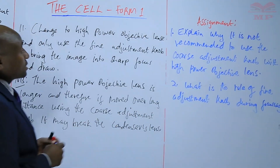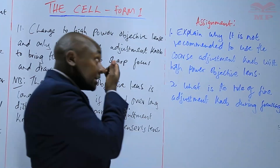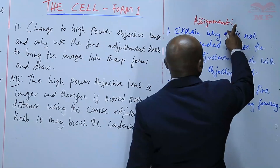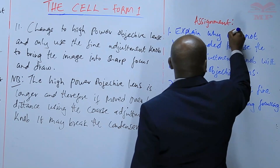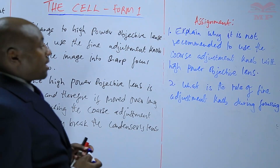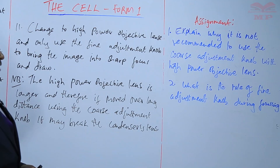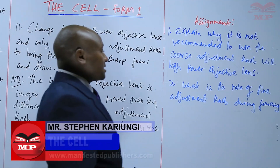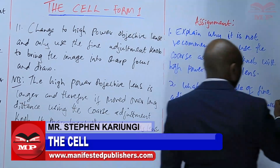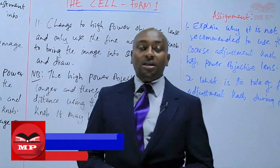We'll have two questions in today's assignment. Question one: explain why it is not recommended to use the coarse adjustment knob with the high power objective lens. Question two: what is the role of the fine adjustment knob during focusing? We'll stop there for today — see you next time, goodbye.